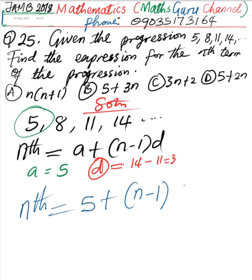The common difference is known to be 3. We have 5 plus, let's break the brackets. 3 times n, we have 3n. 3 times negative 1, we have negative 3.